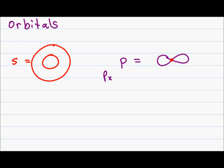Now if you recall, there's a PX, PY, and PZ. And this simply has to do with the orientation in space of the specific orbital.